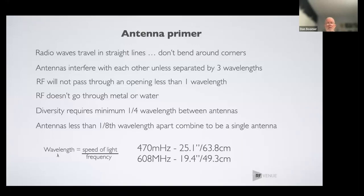RF needs to go through an opening in a single continuous waveform. You may look at chain link fence and think water would go right through — and it will — but for the UHF frequencies we use for wireless mics, around 470 to 608 MHz, if the chain links are two-foot squares the wave passes through, but if they're smaller than that it blocks the wave. RF doesn't go through metal or water hardly at all — barriers that are water or metal are going to completely kill your signal, and other things will diminish it.